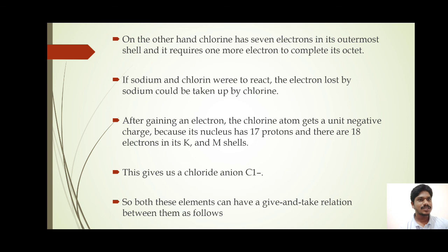After gaining one electron, the number of protons in chlorine remains 17, but because it has gained one electron from sodium, it now has 18 electrons, meaning the net charge on the chloride ion will be minus one.